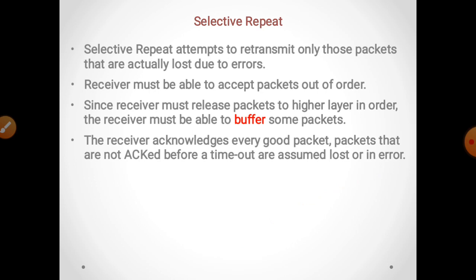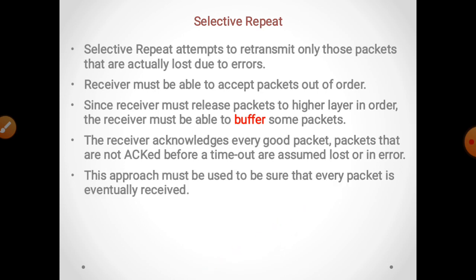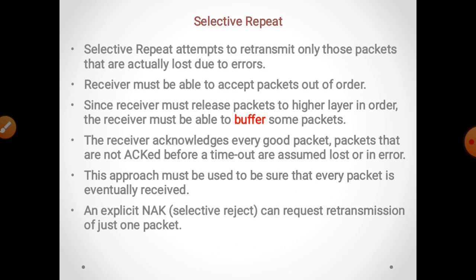Packets that are not acknowledged before a timeout are assumed lost or in error. जो packet नहीं मिले उन्हें lost या error माना जाएगा। This approach must be used to ensure every packet is eventually received. An explicit acknowledgement — selective reject — can request retransmission of just one packet, यानि जो packet lost हुआ है उसके लिए ही receiver sender को request भेजेगा और sender वही packet वापस send करेगा।